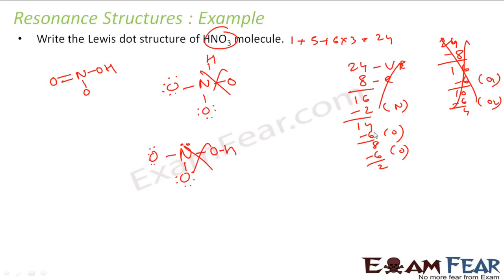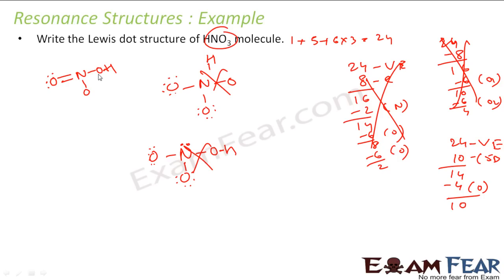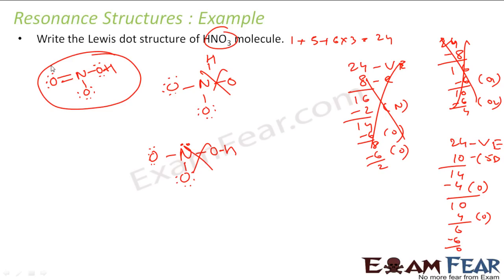Let us start with a new structure that has a double bond. We have 24 valence electrons with 5 bonds, so 10 electrons are gone — 14 electrons remaining. Nitrogen is already happy. This oxygen has 4 electrons — add 4 more, oxygen is happy, 10 remaining. Next oxygen has 4 electrons — add 4 more, happy, 6 remaining. Give 6 to the last oxygen — this oxygen is happy. Zero electrons remaining, everybody is happy. This is the shape of HNO3. But if we look at HNO3, we can also make other possible structures.